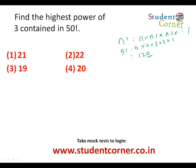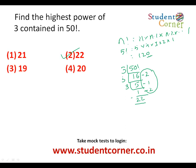Whenever they ask about the highest power of any prime number in n factorial, we directly divide n by that prime successively. So: 50 ÷ 3 = 16 remainder 2, then 16 ÷ 3 = 5 remainder 1, then 5 ÷ 3 = 1 remainder 2. We leave the remainders since they are less than 3. Adding the quotients: 16 + 5 + 1 = 22. Therefore the highest power of 3 in 50 factorial is 22.